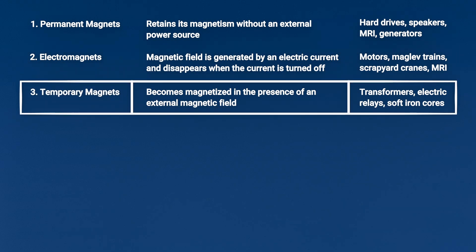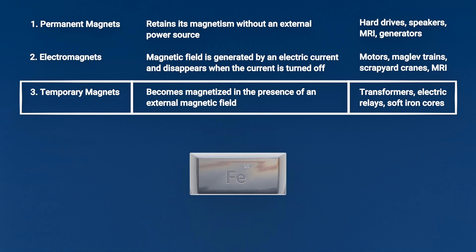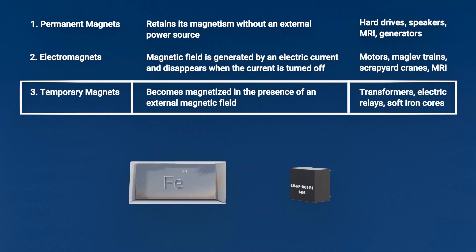3. Temporary magnets. Materials like soft iron become magnetized when exposed to a magnetic field. Once the external field is removed, they lose their magnetism. These are often used in transformers and electric relays.